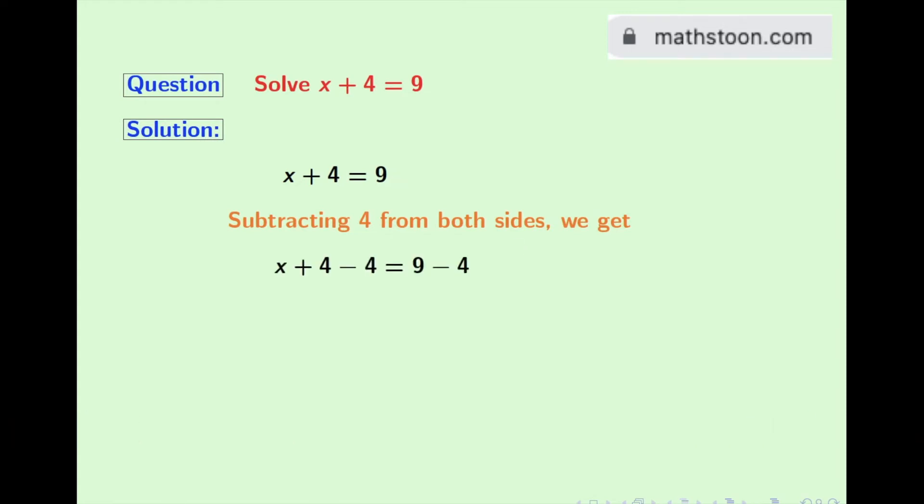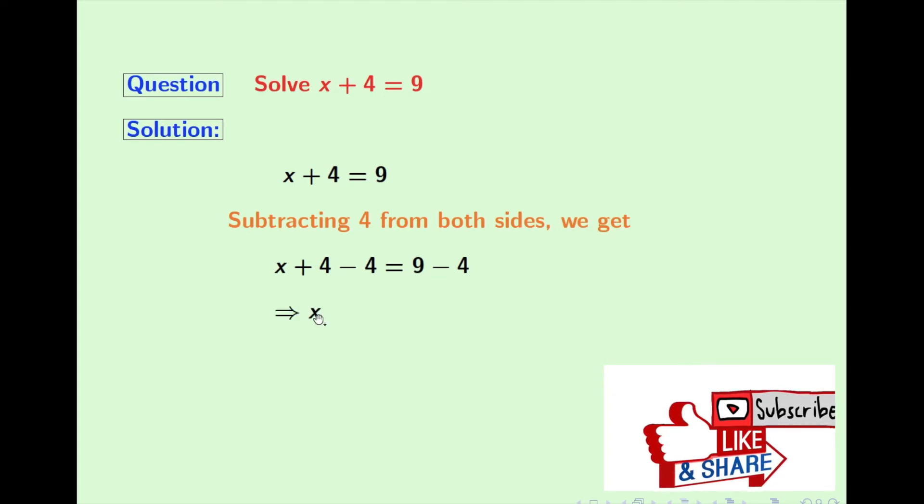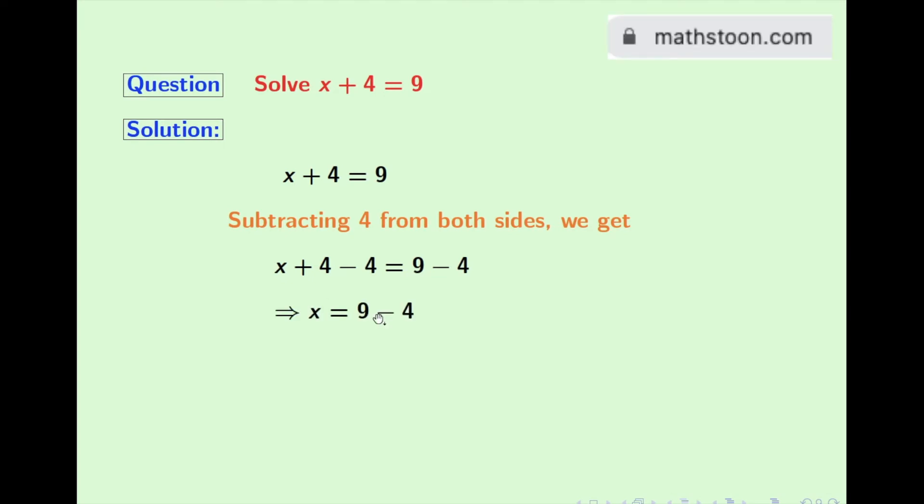Doing that we get x plus 4 minus 4 is equal to 9 minus 4. Simplifying the left hand side, we get x. And in the right hand side, we have 9 minus 4. So finally, we get x is equal to 5.